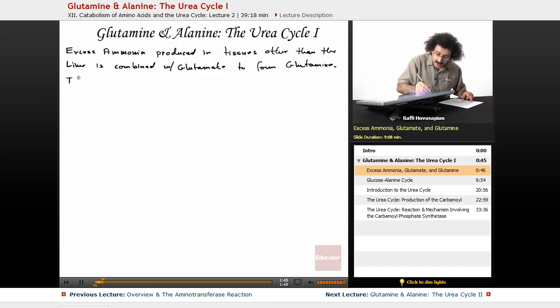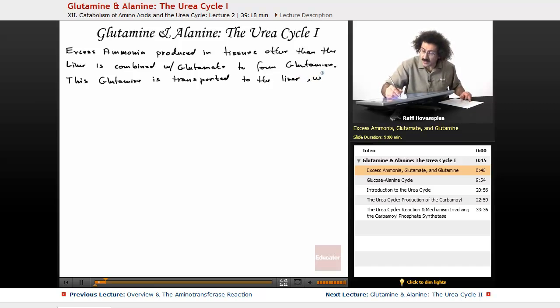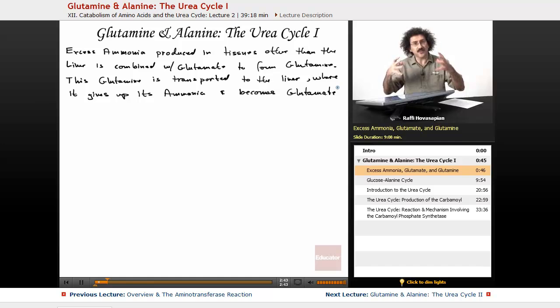This glutamine is transported to the liver. You remember from the overview in the last lesson, that was one of the sources of amino groups, the amino groups from outside of the liver that was brought into the liver via glutamine. So this glutamine is transported to the liver where it gives up its ammonia and becomes glutamate again. This glutamate is the central molecule for this whole amino acid metabolism.